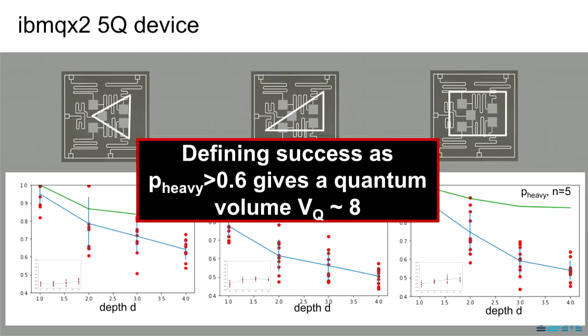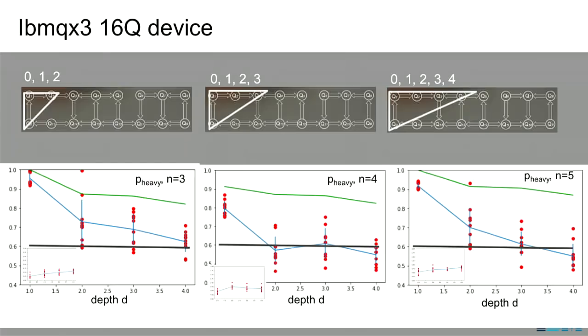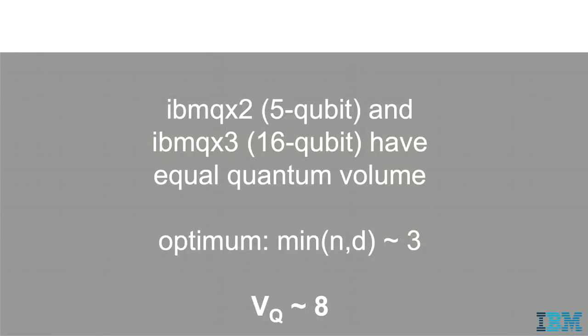Similarly, running on the 16-qubit device for three, four, five, and more qubits, you still don't reach improvement in terms of depth. So for both the IBM five-qubit and 16-qubit devices, even though we have more qubits on the 16-qubit device, we have equal quantum volume of 8. When we went from five qubit to 16 qubit, we didn't really improve too much in terms of gate errors — and this is captured by the quantum volume metric.